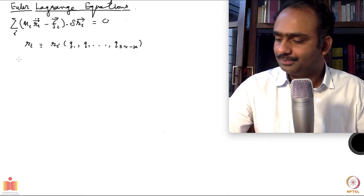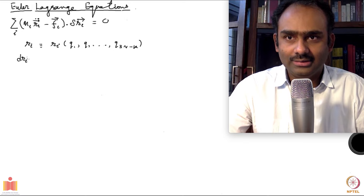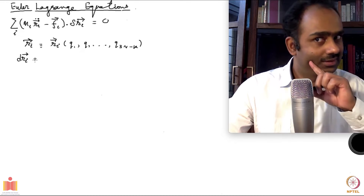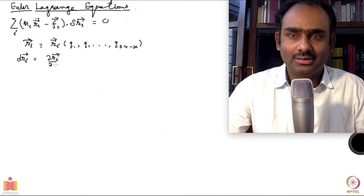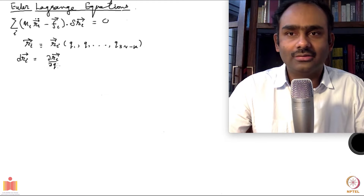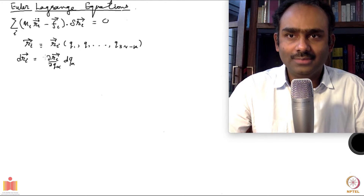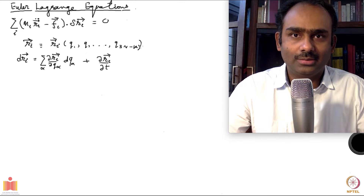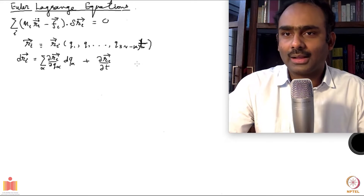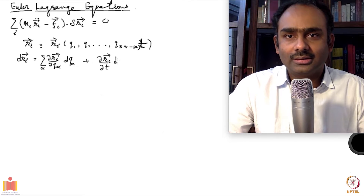Now I can take a differential of this and write dRᵢ. We should include time as well, so Rᵢ is a function of the Q's and t. Then dRᵢ equals the sum over α of (∂Rᵢ/∂Qα) dQα plus (∂Rᵢ/∂t) dt.